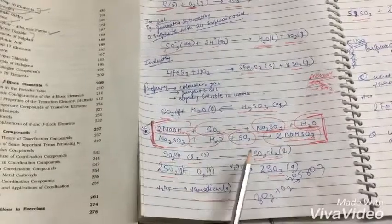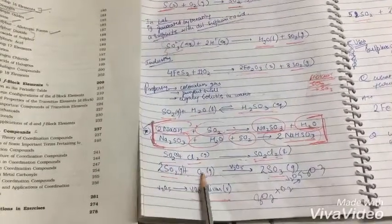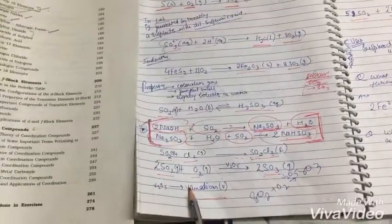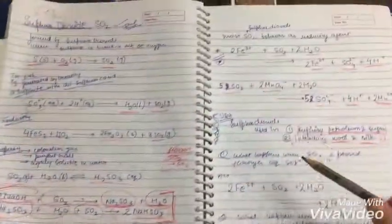SO2 plus Cl2 gives SO2Cl2. SO2 plus O2 in the presence of V2O5 gives SO3. And V2O5 is our catalyst.